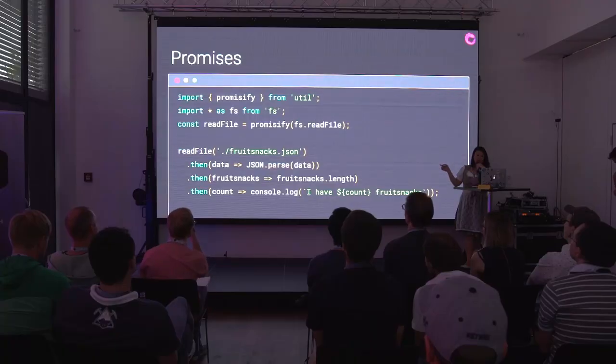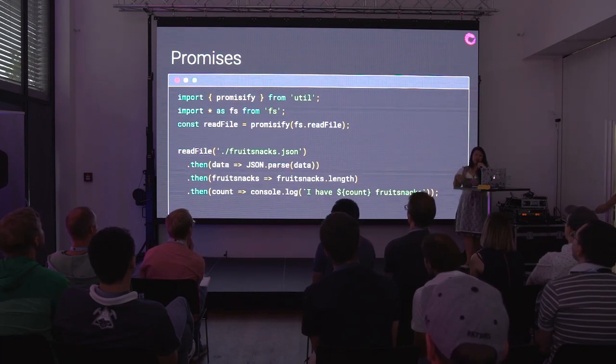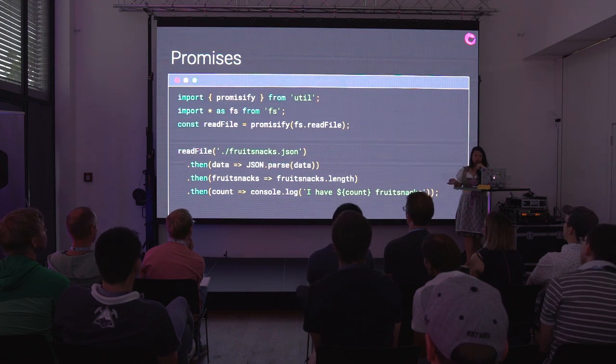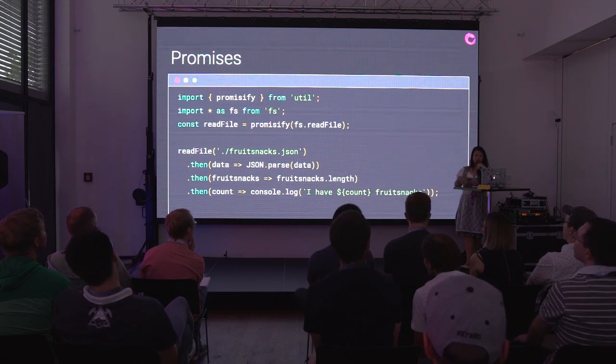Here we're using a promisified read file. My file contains an array of fruit snacks. We're parsing the JSON we get from it — presumably into an array — and then on the next step we're getting the length of that array and logging it to the console to say how many fruit snacks we actually have.